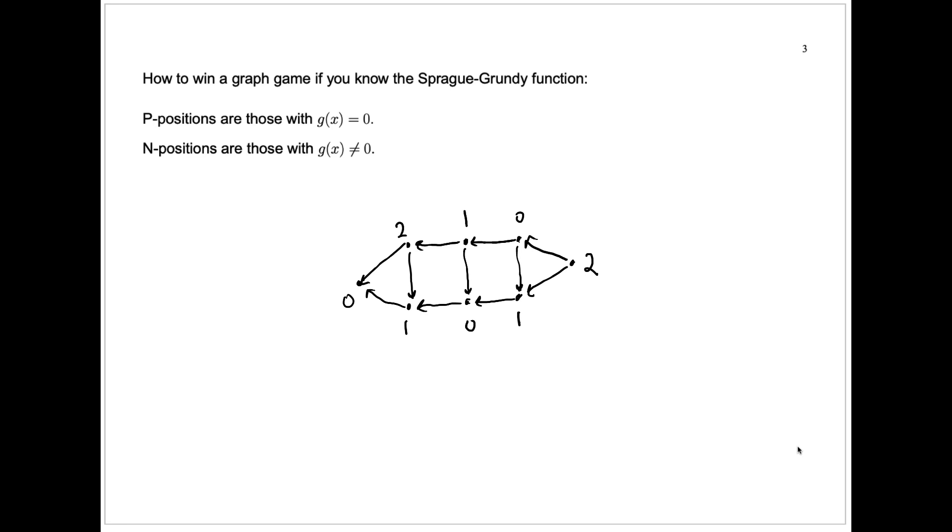then the p positions in that graph game are just nodes where the Sprague-Grundy function, g of x for that node x, is zero. End positions are those with g of x not equal to zero.